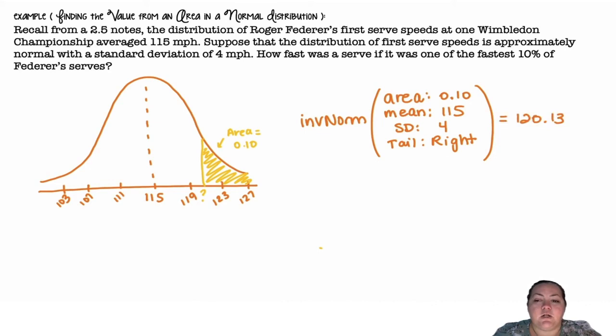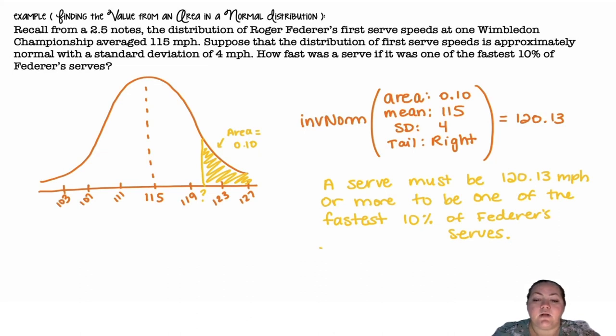When you put this in, you get 120.13. So a serve must be 120.13 miles per hour or more to be one of the fastest 10% of Federer's serves.